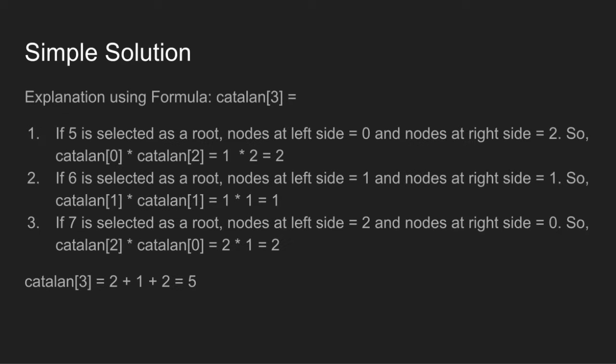The logic behind drawing possible binary search trees is to choose one node at a time as a root node. If 5 is root, nodes at left side is 0 and nodes at right side are 2, so Catalan of 0 into Catalan of 2 is 2. If 6 is root, Catalan of 1 into Catalan of 1 is 1. If 7 is root, nodes at left side are 2 and nodes at right side is 0, so Catalan of 2 into Catalan of 0 is 2. We get Catalan of 3 as 5.